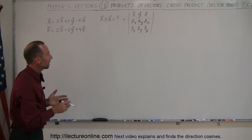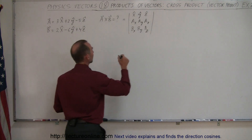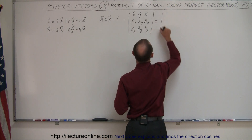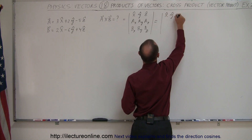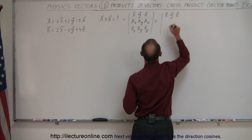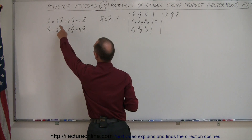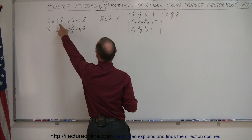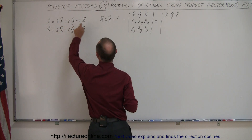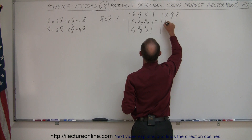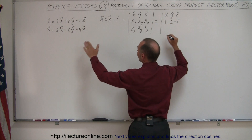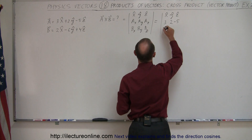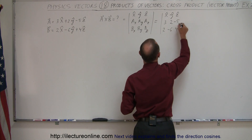So if we put in the numbers, this is equal to unit vectors X, Y, and Z in the first row; the X, Y, and Z components of the first vector — three, two, and minus five — in the second row; and two, minus six, and four for the second vector in the third row.